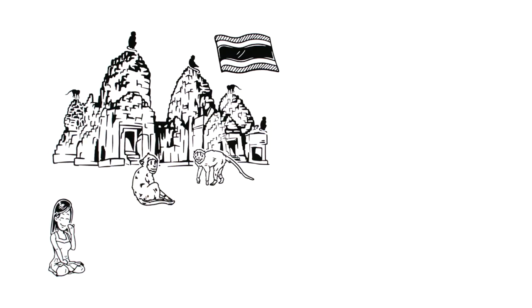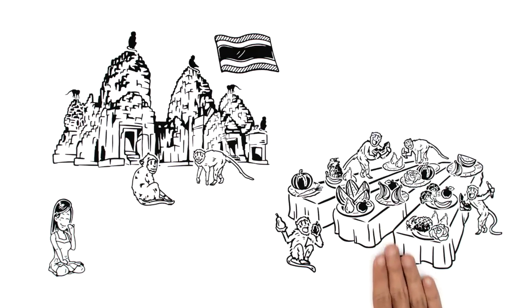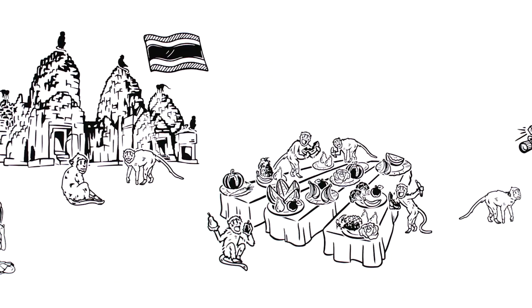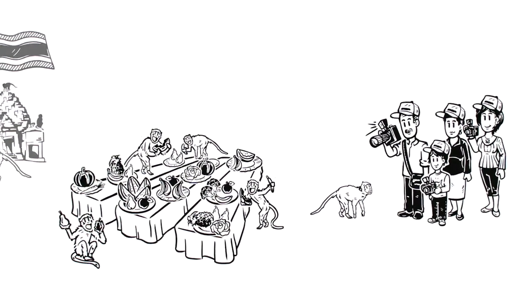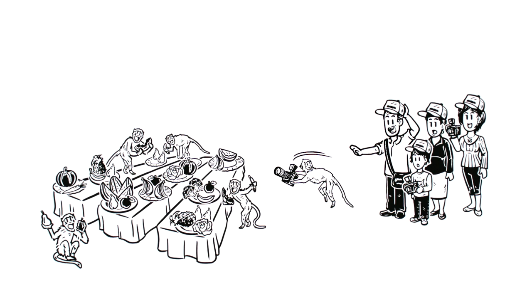Cat is surprised to hear that in Lopburi, Thailand, they have a huge buffet for thousands of hungry monkeys. With 4,000 kilos of fruit, vegetables and cake up for grabs, tourists can take photos at their own risk.